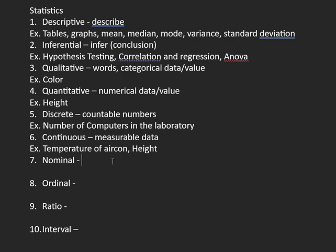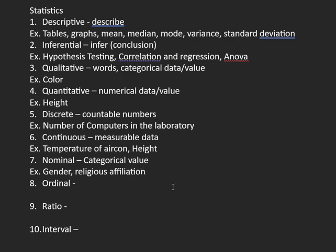For nominal and ordinal levels of measurement, this pertains to your data. To determine if it would be a nominal level of measurement, it's just a categorical value. Since qualitative data is also categorical data, nominal is under qualitative. Any category you could think of would be an example of nominal, and it also falls under qualitative. We can already determine if it would be nominal or ordinal if you're asking for a categorical value.